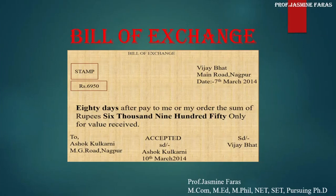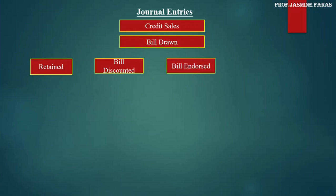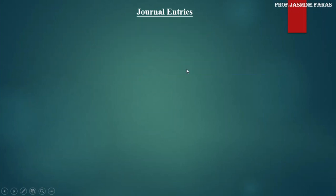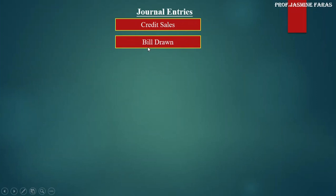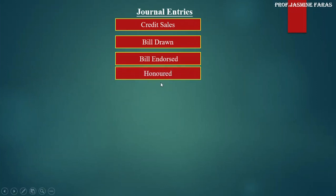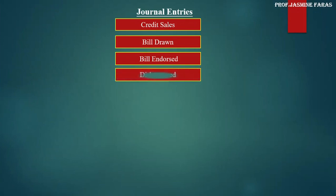Good morning to all my dear students. I hope you are enjoying Bill of Exchange. We have already seen bill retained and bill discounted cases. Today we'll see bill get endorsed. After credit sales, the drawer has four options — already we have seen retained and discounted, today we'll focus on bill endorsed. In exam questions, the bill will get dishonored, because if four entries only come, it won't give 10 marks. So we assume the bill will get dishonored.